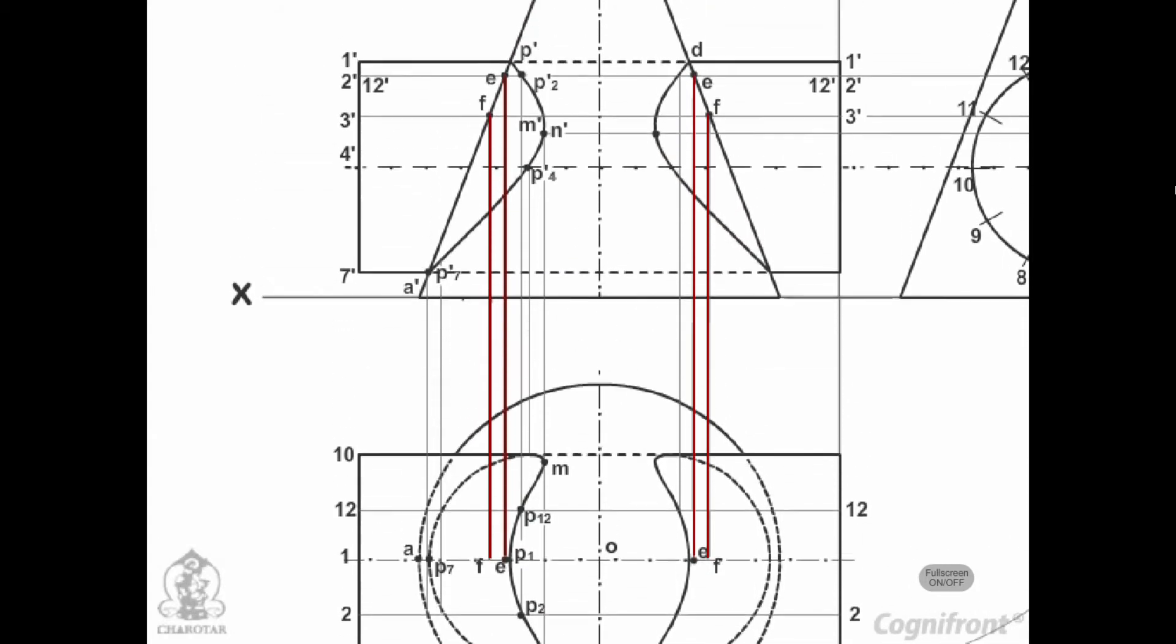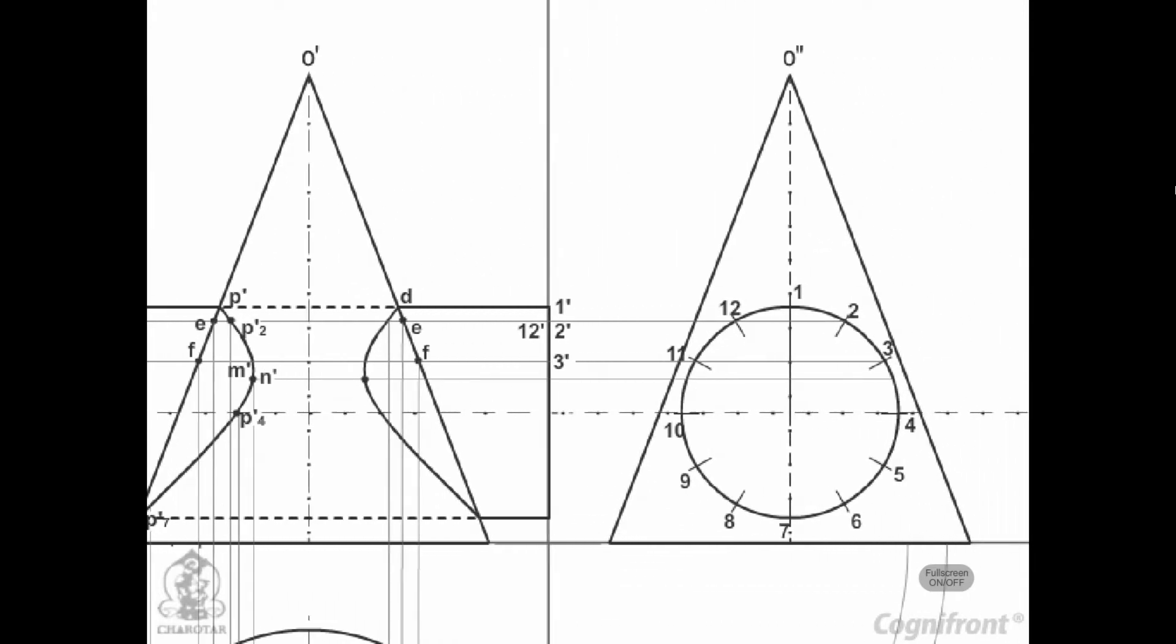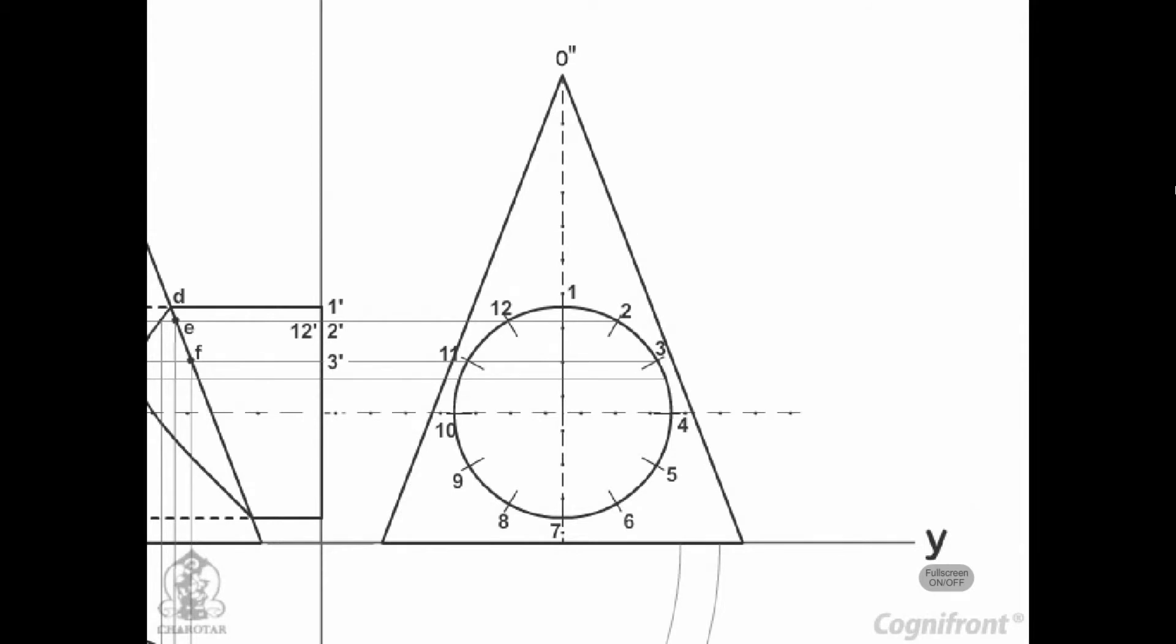Project these points to the corresponding lines in the front view. Two more key points at which the curve changes directions must also be located. Their positions are determined from the side view. They are the points of nearest approach, i.e., M'' and N'', at which the lines drawn from the center of the circle and perpendicular to the extreme generators of the cone cut the circle.